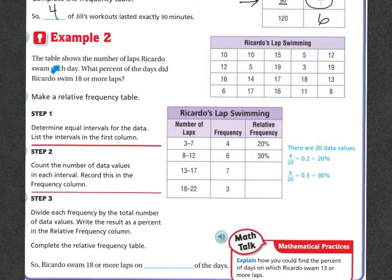Example 2: The table shows the number of laps Ricardo swam each day. What percentage of the days did Ricardo swim 18 or more laps? So here's his laps all recorded. Make a relative frequency table. Step 1: Determine the equal intervals for the data list interviews in the first column. So they decided that 3 through 7, 8 through 12, 13 through 17, and 18 through 22.